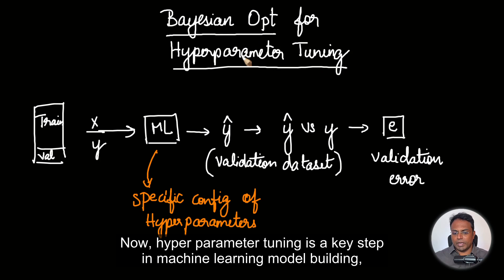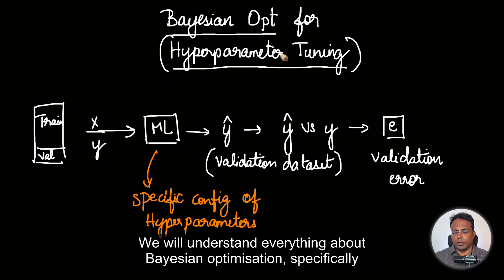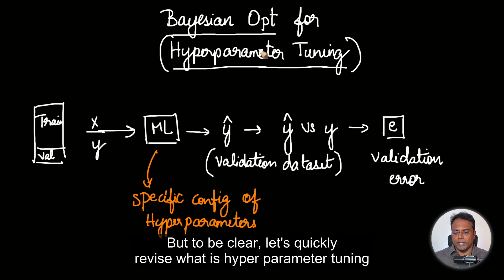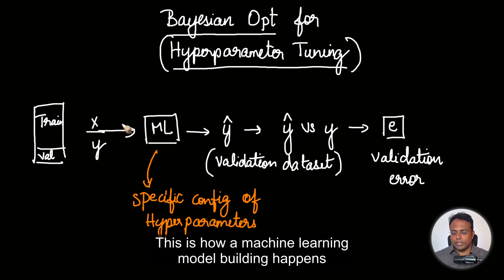Hyperparameter tuning is a key step in machine learning model building, but it can be quite time-taking. We will understand everything about Bayesian optimization specifically. But to be clear, let's quickly revise what hyperparameter tuning is in the first place, so that everything will make sense and fall in place.